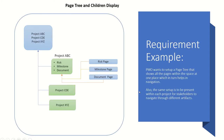This is the scenario we are going to execute. The requirement is PMO wants to set up a page tree that shows all the pages within the space at one place, which in turn helps in navigation. For example, this is the top page and we have these child pages: Project ABC, CD, XYZ. At the main page we want to see links to these pages.